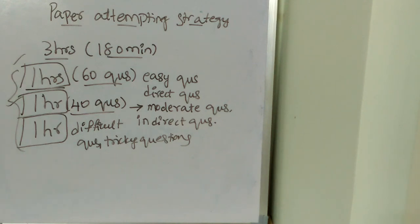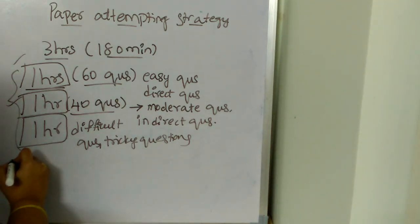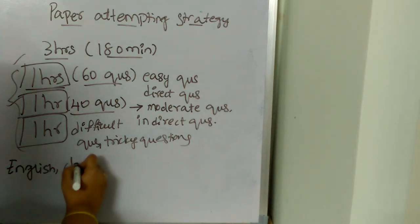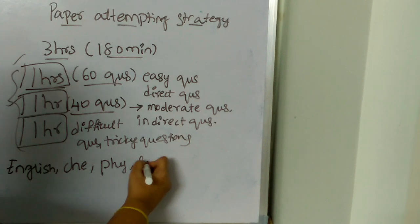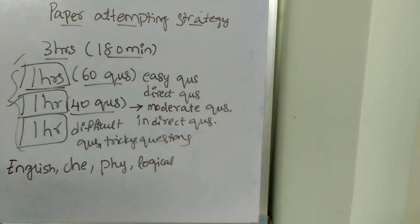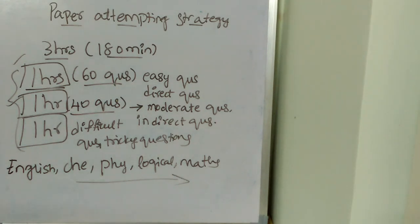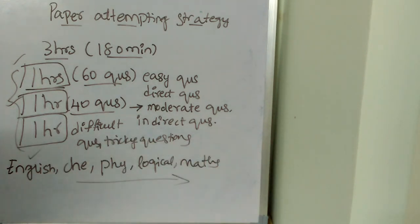Now, the order in which to solve subjects: start with English, then go to Chemistry, then Physics, then Logical Reasoning, and finally Maths. Start with English because about 80% of its questions are direct and easy. Then Chemistry is the next easiest, followed by Physics. Solving in this sequence will help you get a really good score.